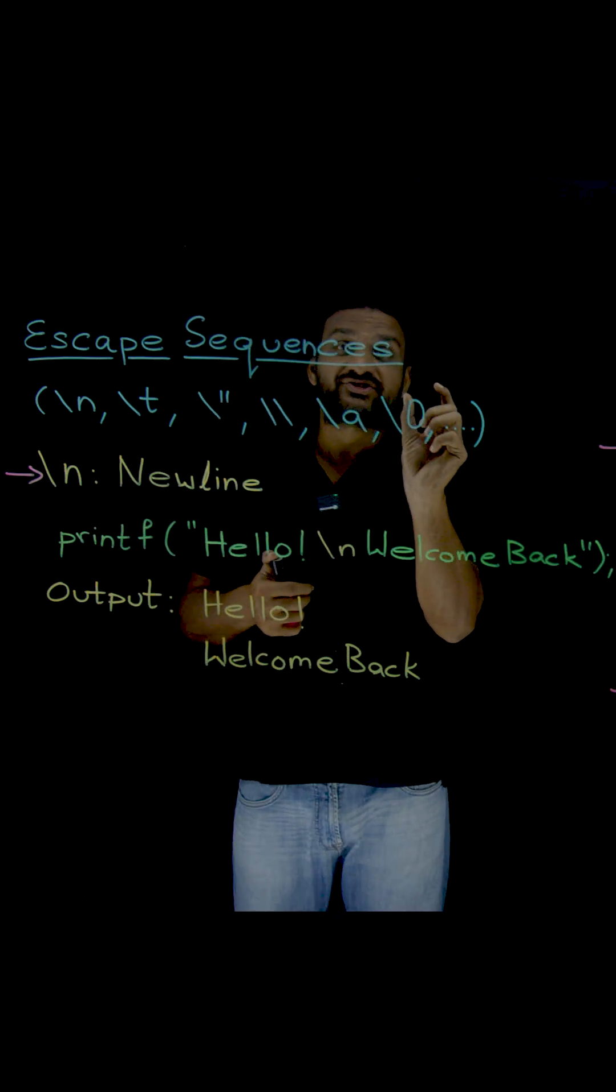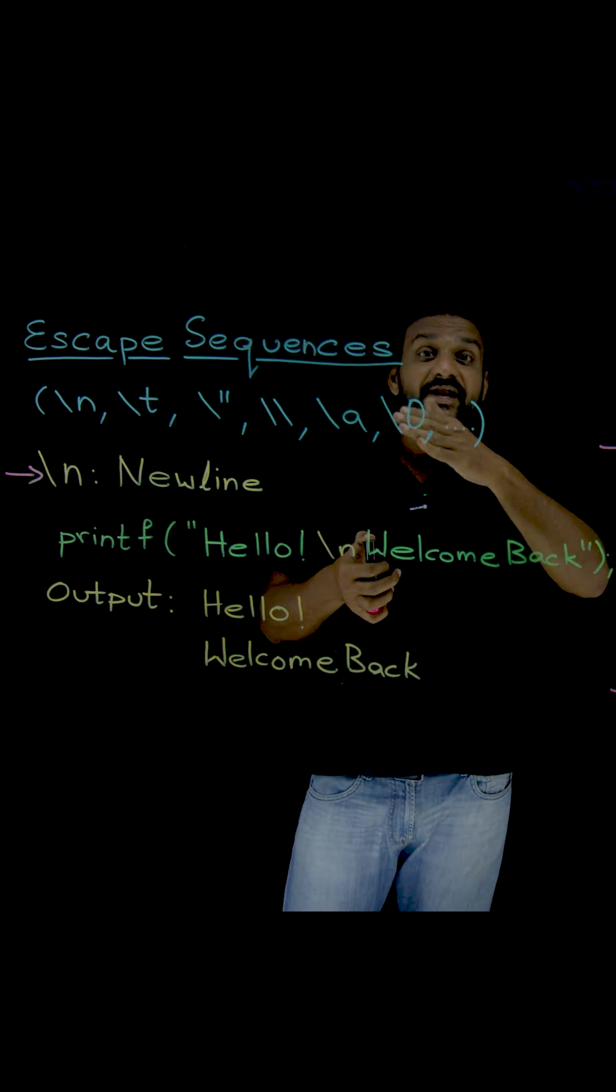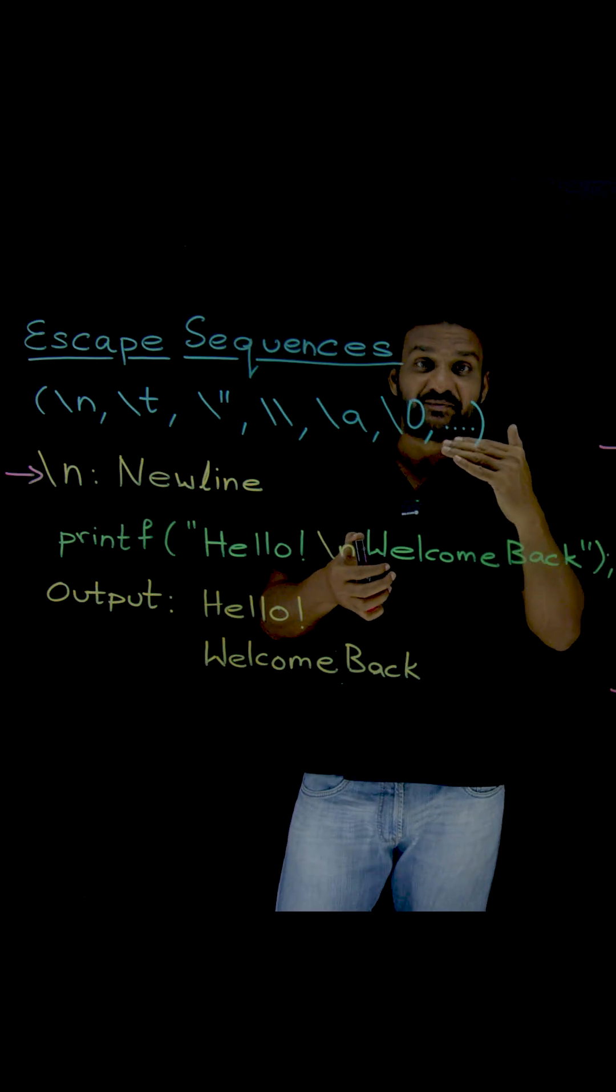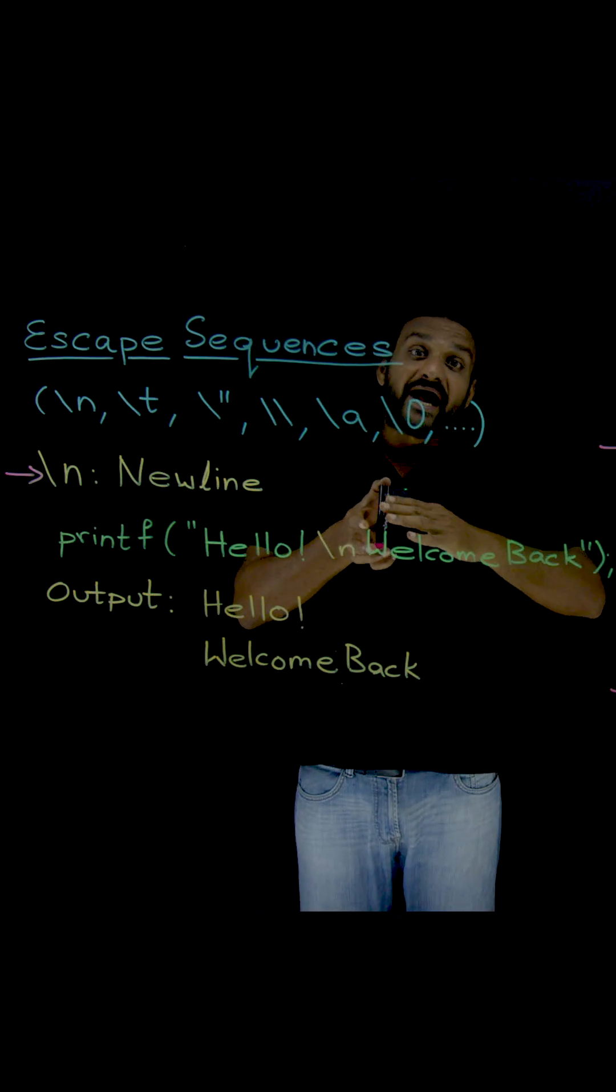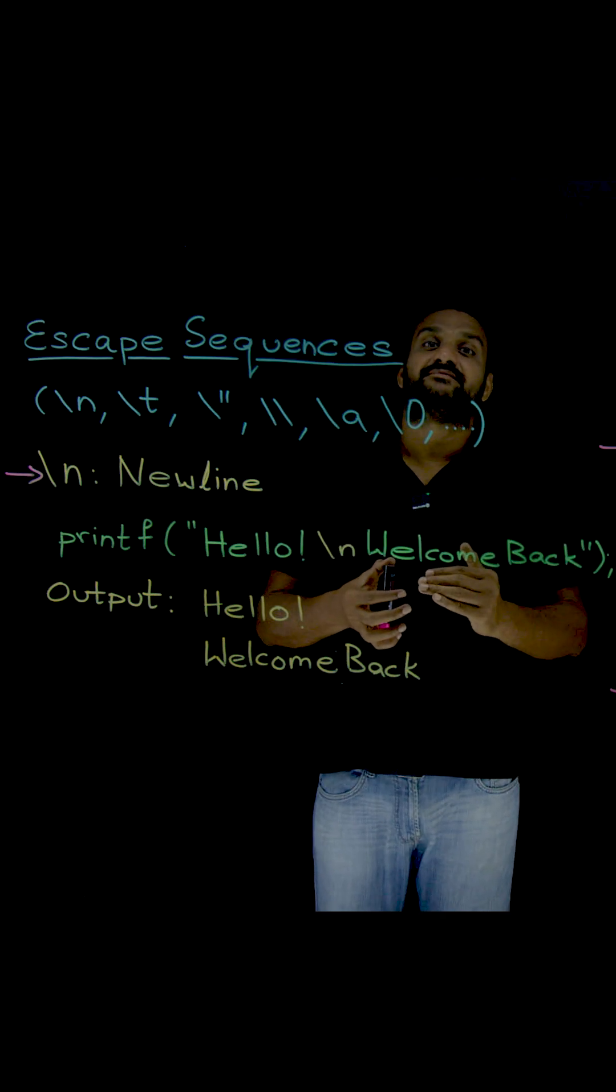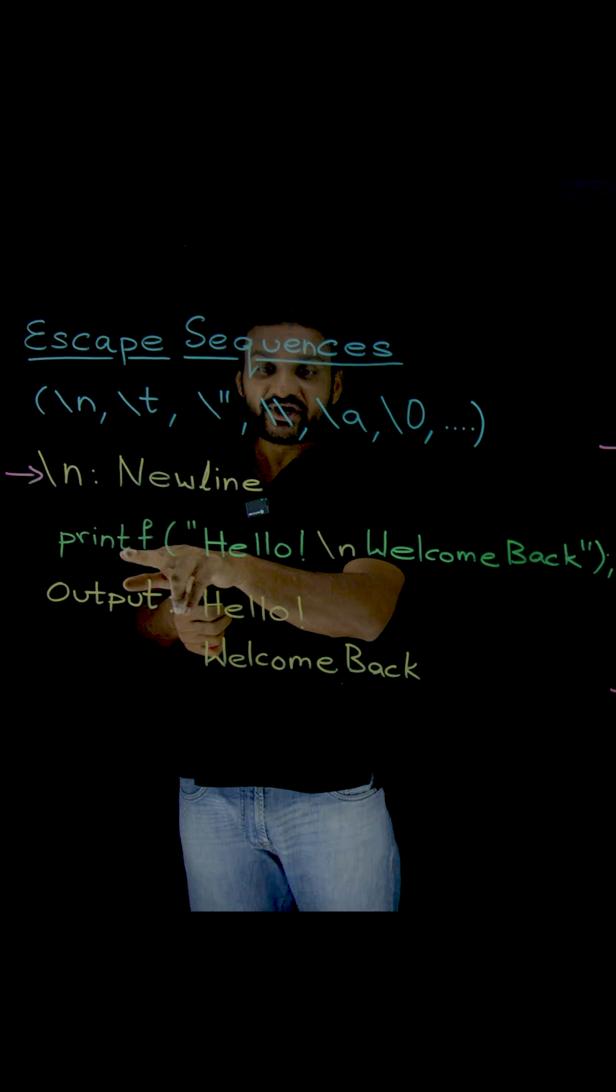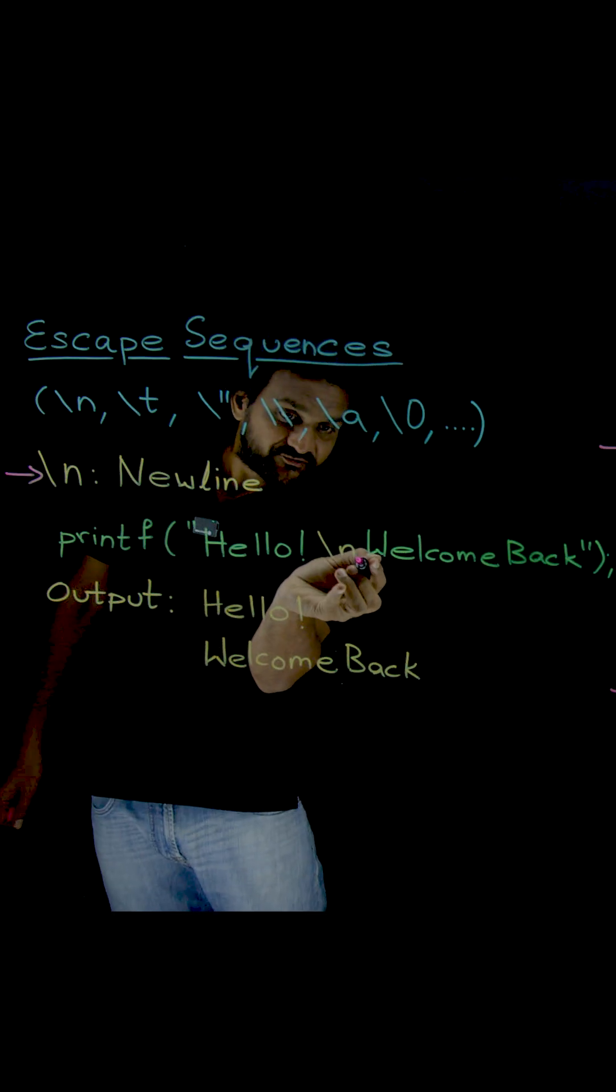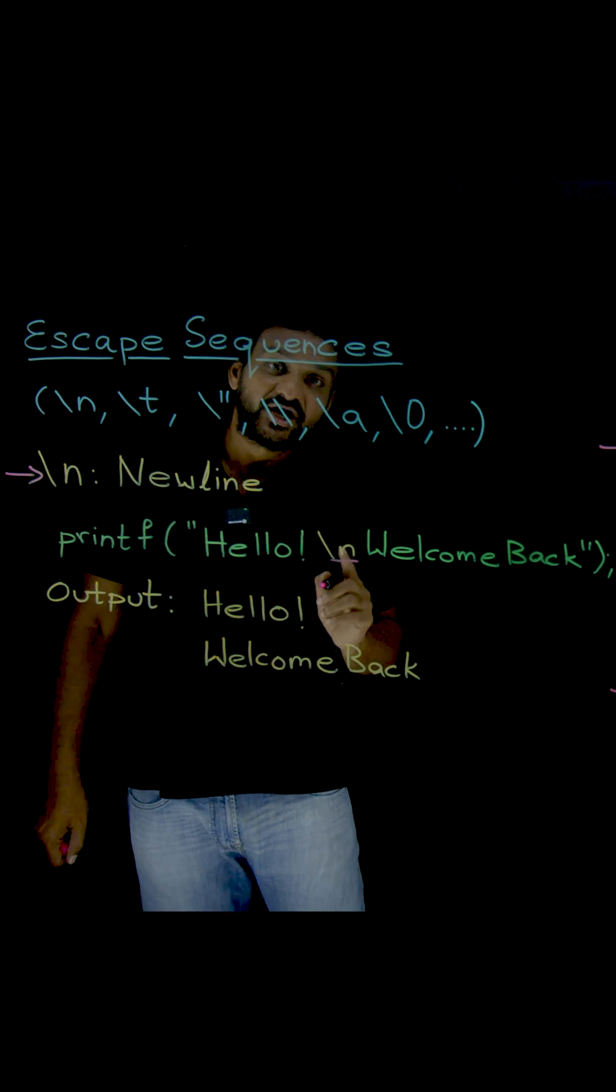Whenever we use slash n within the format string of the printf function, a new line will get created. This means the cursor will immediately move to the next line and the remaining part of the printf function will get printed in the next line. Let's understand this concept using an example. Here we have a printf, and in this printf we used the escape sequence slash n, which means new line.